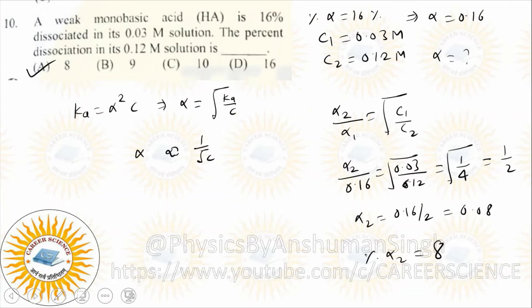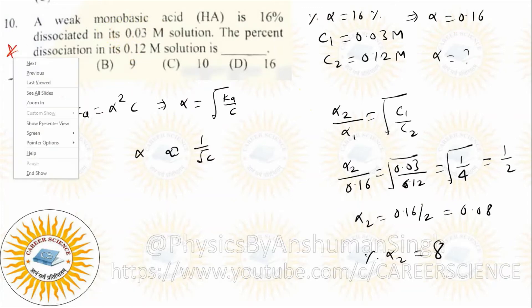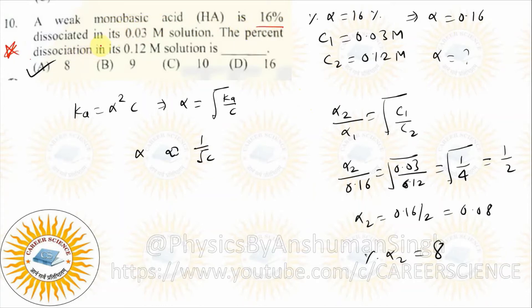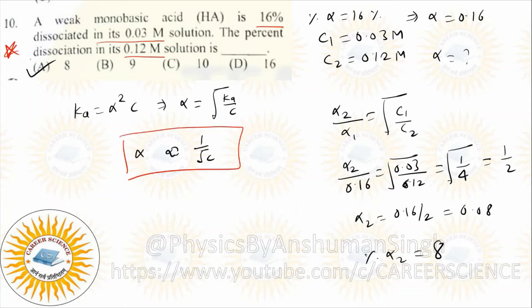This is a star problem — keep it in mind. A monobasic acid is 60% dissociated in its 0.03 molar solution. Find the percentage dissociation in 0.12 molar solution. So your concentration here has increased. When concentration increases, degree of dissociation decreases — you have studied this. Use this and solve. Answer in percentage — convert alpha to percentage at the end.